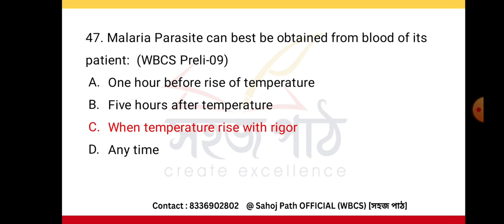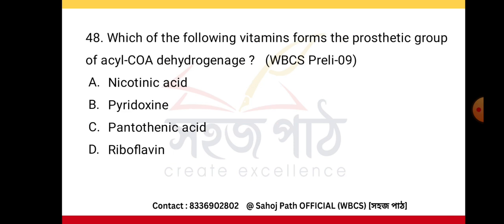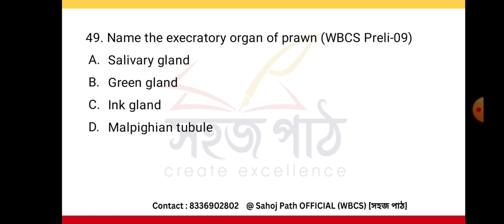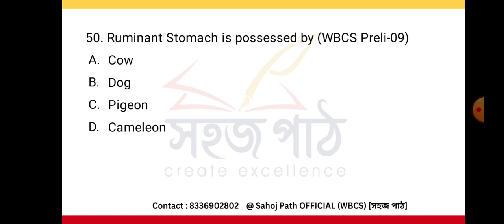The malaria parasite can best be obtained from the blood of a patient when the temperature rises with rigor. The vitamin that forms the prosthetic group of acyl-CoA dehydrogenase is riboflavin. The excretory organ of prawns is the green gland. The ruminant stomach is possessed by a cow.